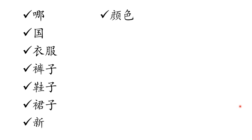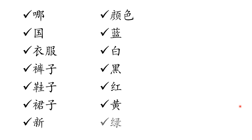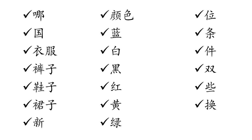Try to recognize all the Chinese characters we have learned today: 哪, 国, 衣服, 裤子, 鞋子, 裙子, 新, 颜色, 蓝, 白, 黑, 红, 黄, 绿, 位, 条, 件, 双, 鞋, 换, 带.